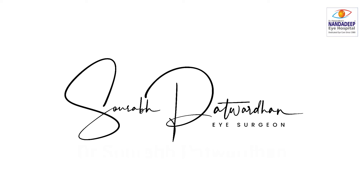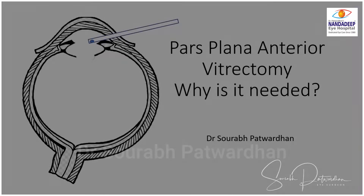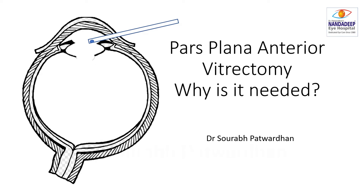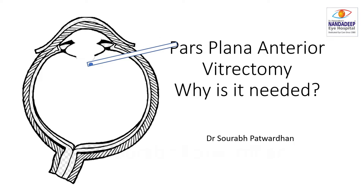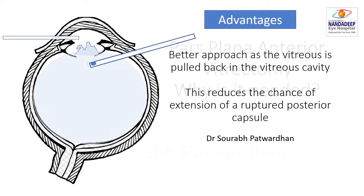In this video, we will be speaking about the parsplana route of anterior vitrectomy and whether it is needed and why it is needed. Most often we are comfortable doing anterior vitrectomy through the limbal route. Then why do we need to go through the parsplana? It is a better approach as the vitreous is pulled back into the vitreous cavity, and this reduces the chances of extension of a ruptured posterior capsule.